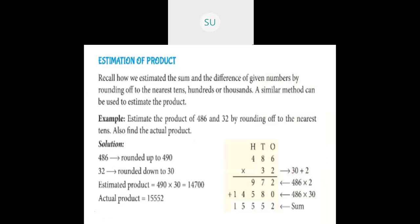We round off both 486 and 32 to the nearest tens. For 486, the ones digit is 6 which is greater than 5, so we add 1 to the tens place — 8 becomes 9 and 6 becomes 0 — giving 490. For 32, we round it down to 30. To find the estimated product, we multiply 490 by 30: first multiply 49 by 3 to get 147, then add two zeros for the two zeros in 490 and 30, giving an estimated product of 14,700.